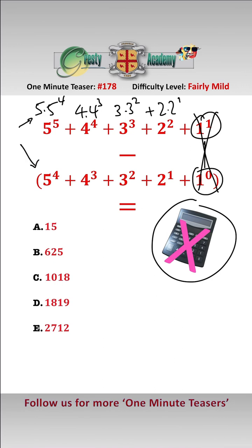Now we have 5 times 5^4, take away 1 times 5^4, so that gives us 4 times 5^4. We have 4 times 4^3, take away 1 times 4^3, which gives us 3 times 4^3.